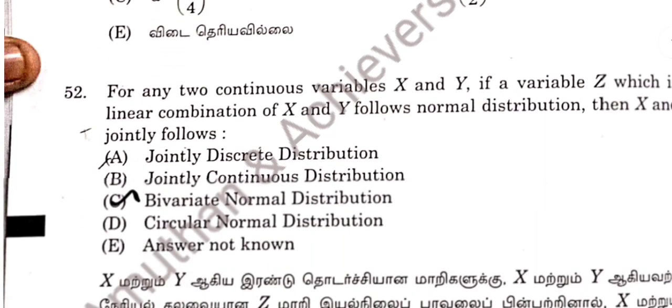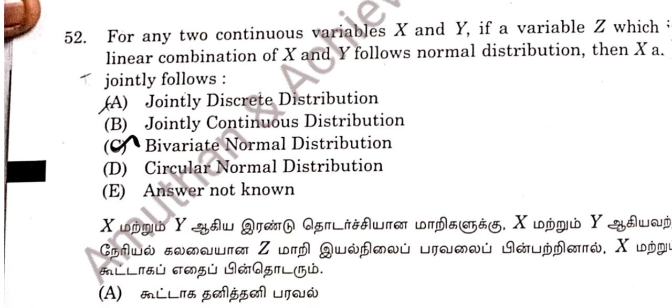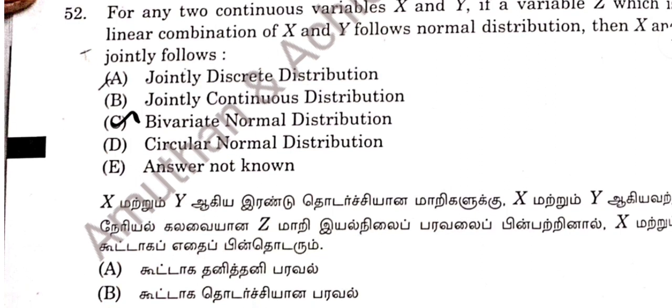Question 52: Part 2 involves x and y, where z will be a linear combination of x and y following a bivariate normal distribution. 52 option is noted.